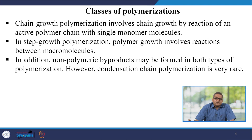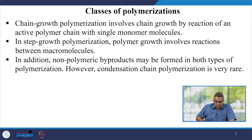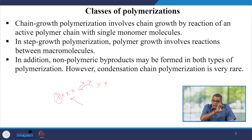We discussed about addition and condensation polymerization. Another class is called chain growth polymerization. This involves the chain growth by a reaction of an active polymer chain with a single monomer molecule. For example, this is my chain and over the period of time, different monomers — X represents the monomer — can add on to form the chain or growth of the chain.